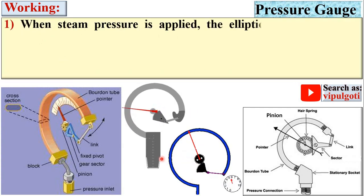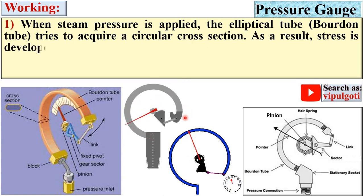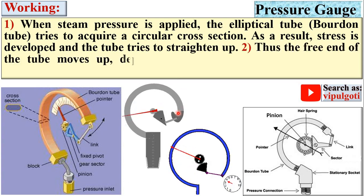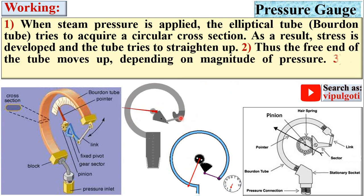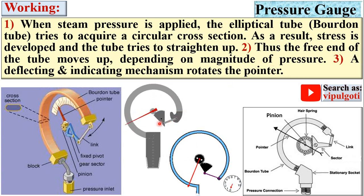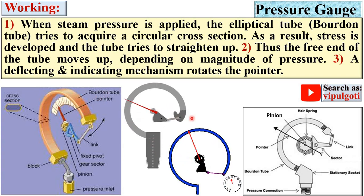When steam pressure is applied, the elliptical tube — that means the Bourdon tube — tries to acquire a circular cross section. As a result, stress is developed and the tube tries to straighten up. Thus, the free end of the tube moves up depending on the magnitude of the pressure of the steam. A deflecting and indicating mechanism then rotates the pointer.